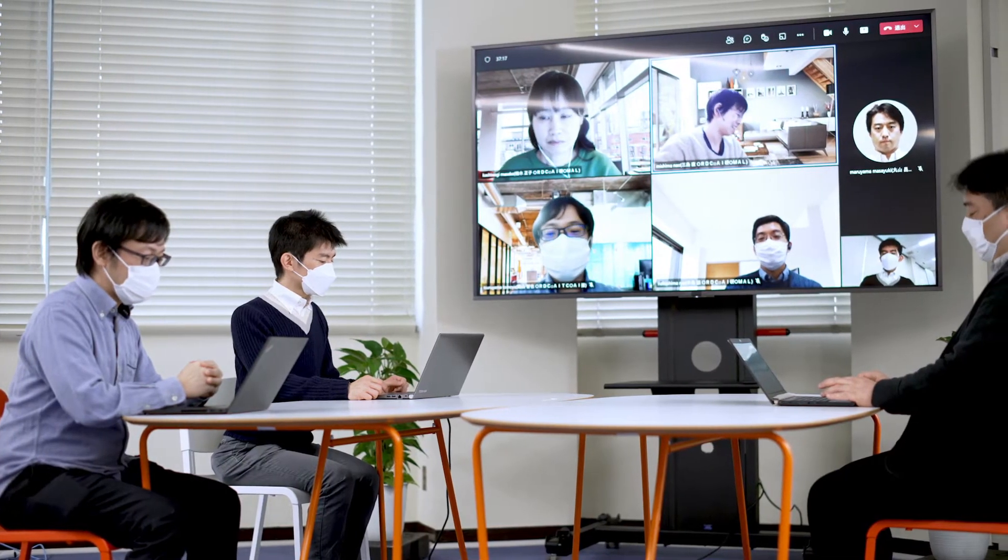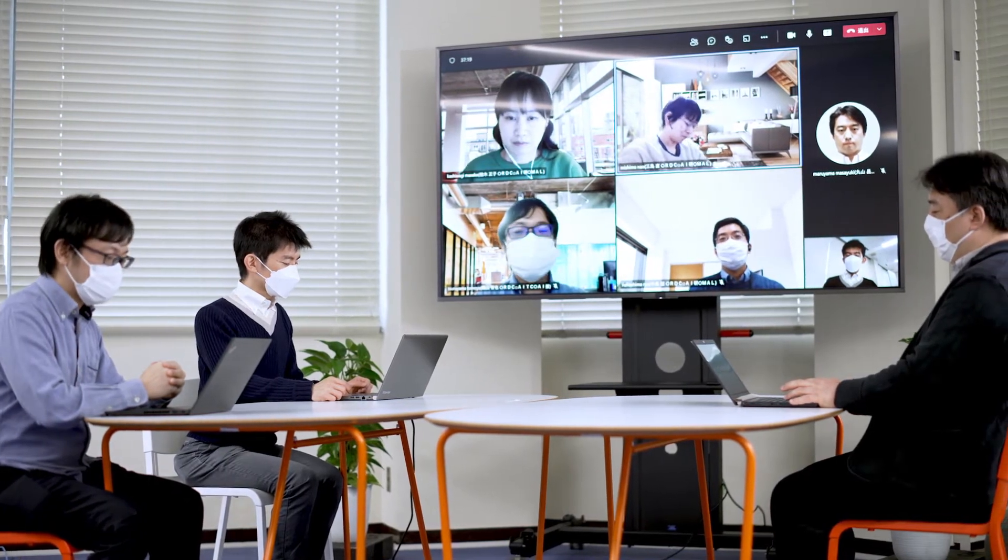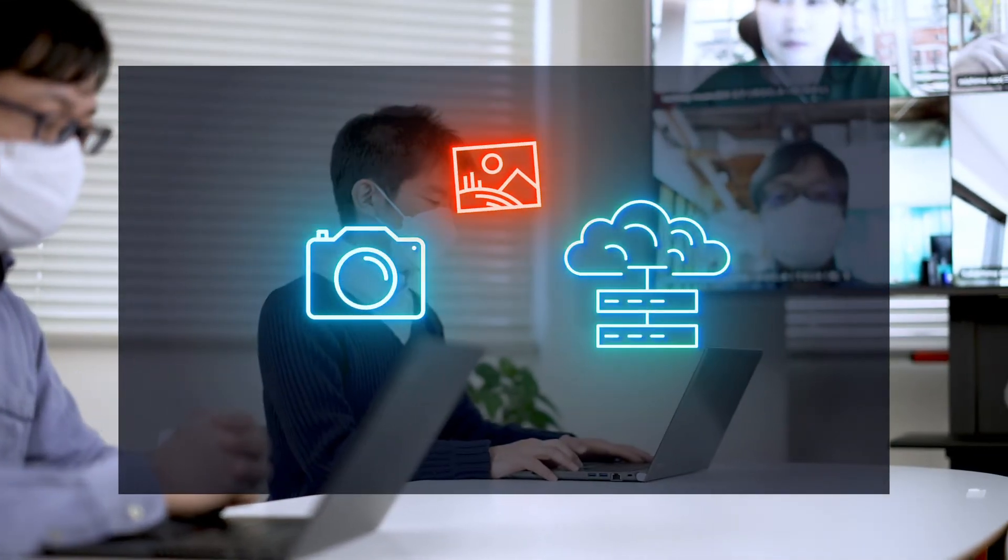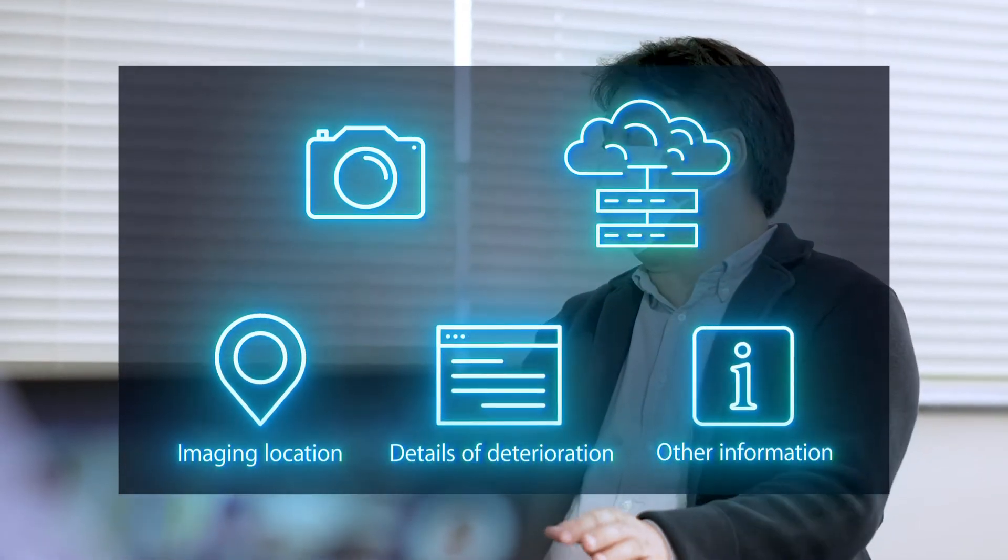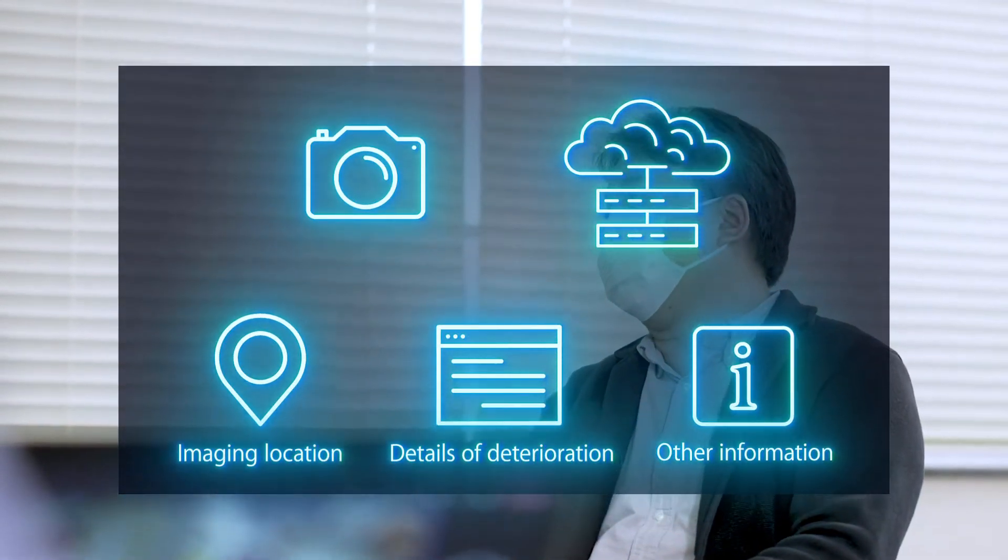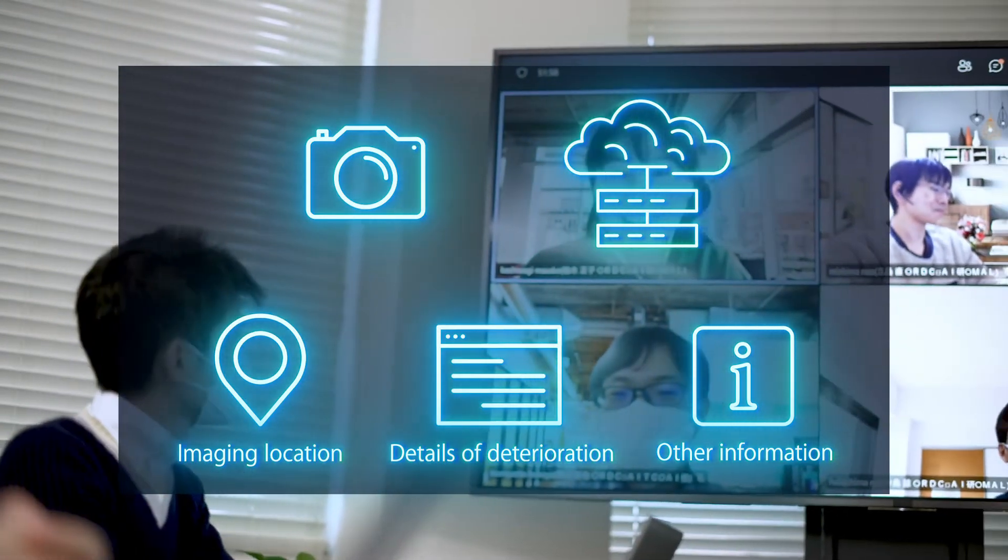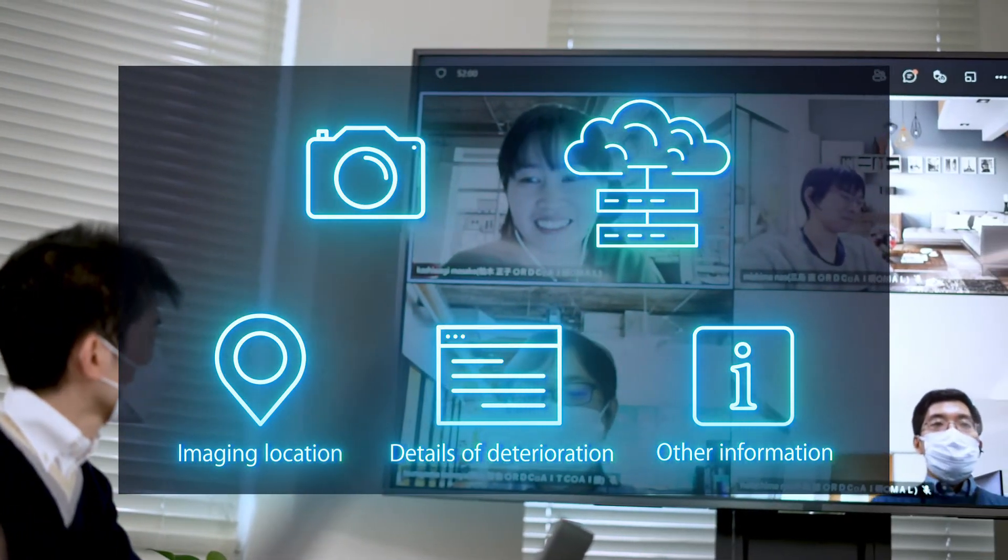combining multiple AI technologies, just uploading a photograph taken during inspection to a server makes it possible to automatically recognize the imaging location and the size of a subject such as a crack. It enables infrastructure inspection to be done automatically.